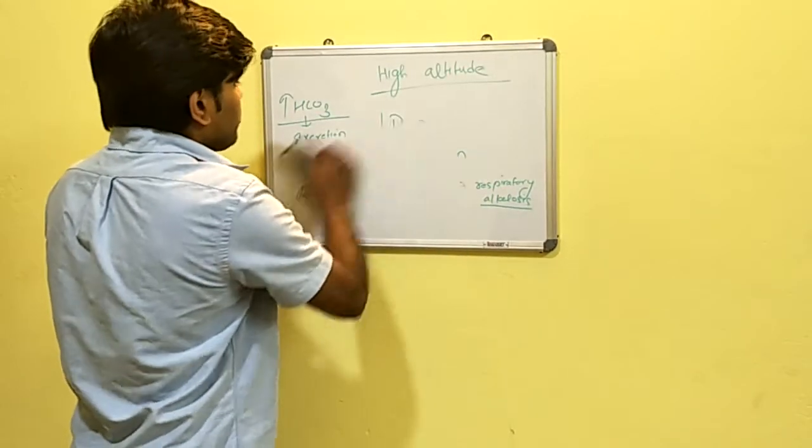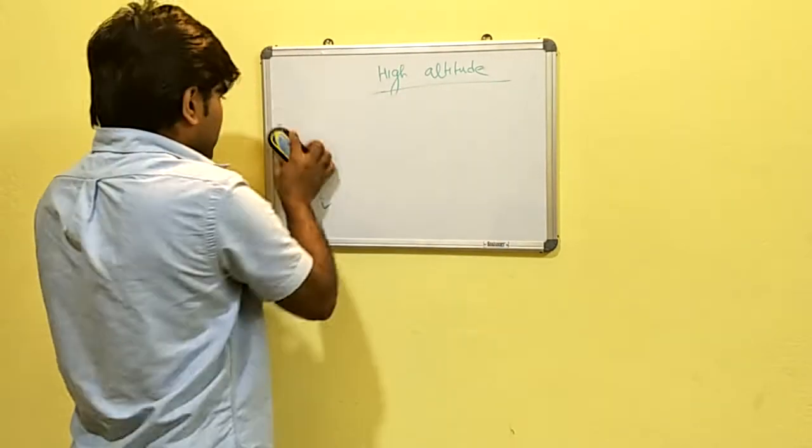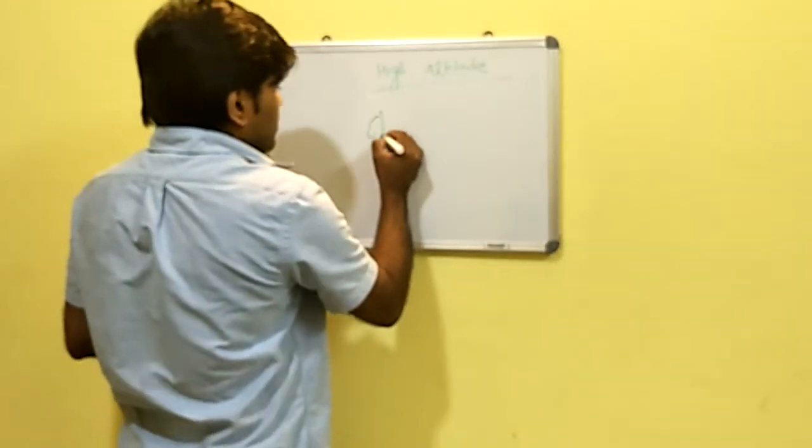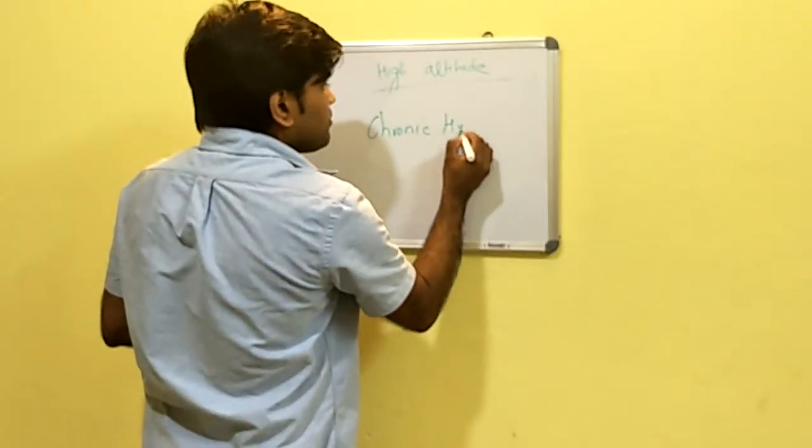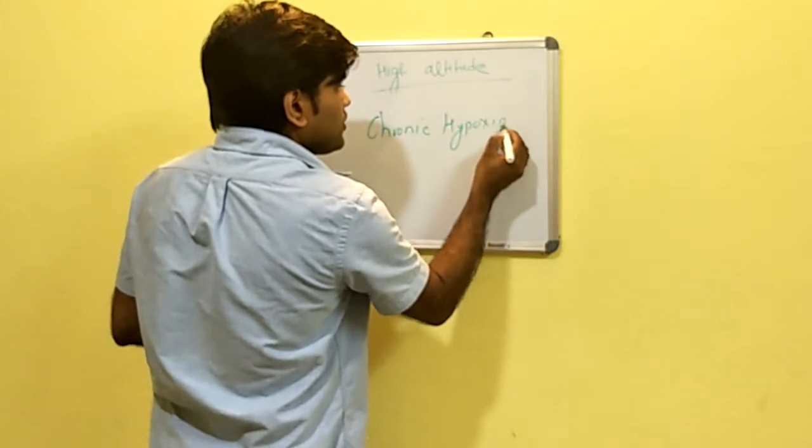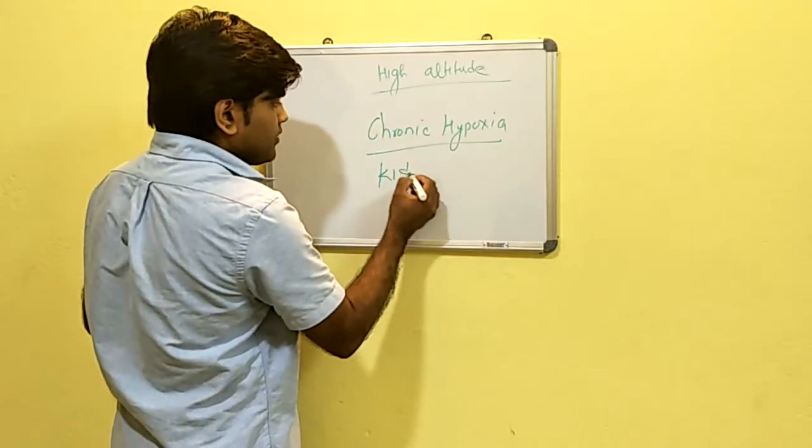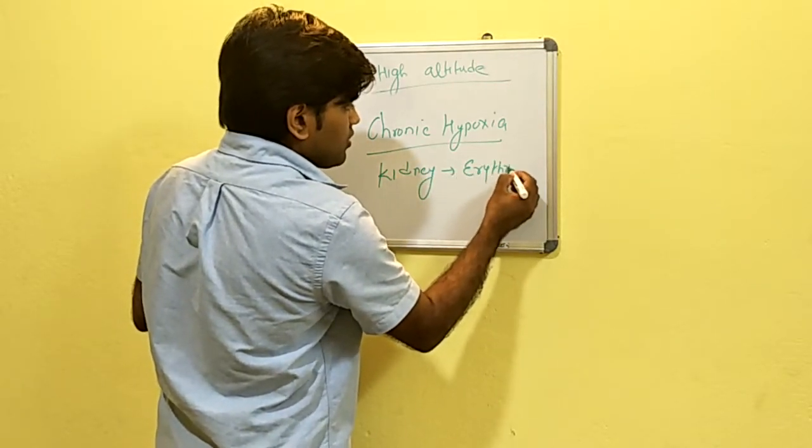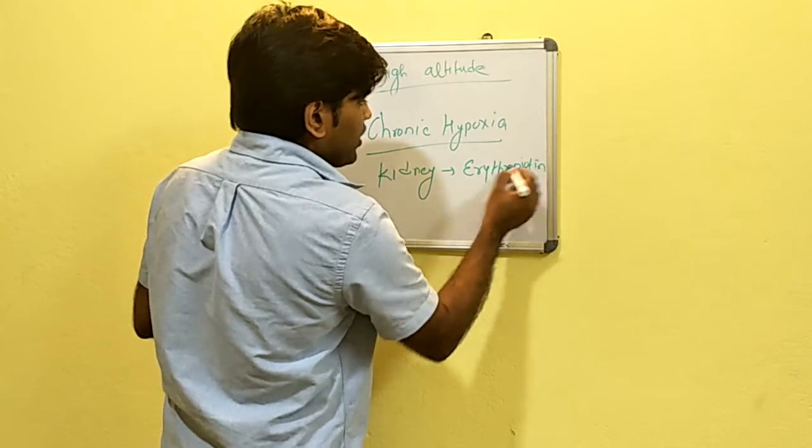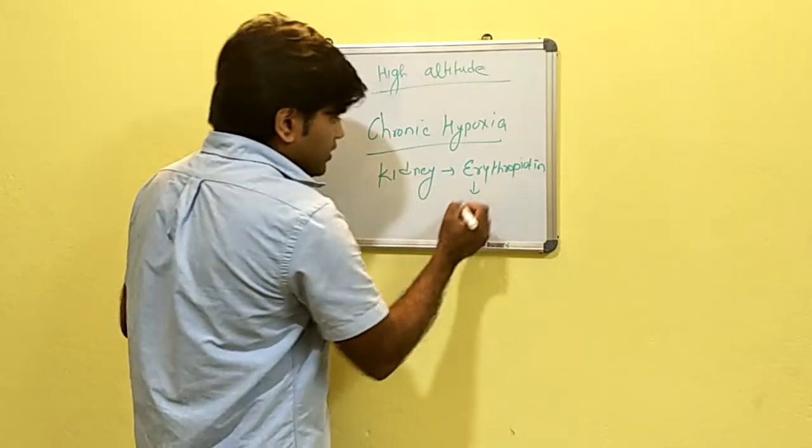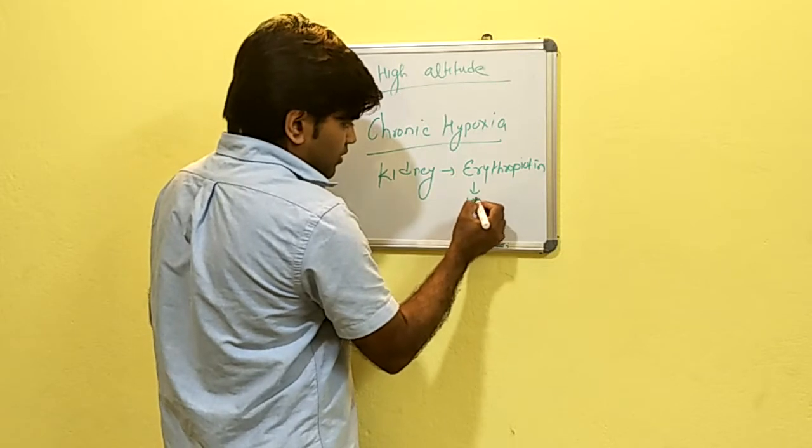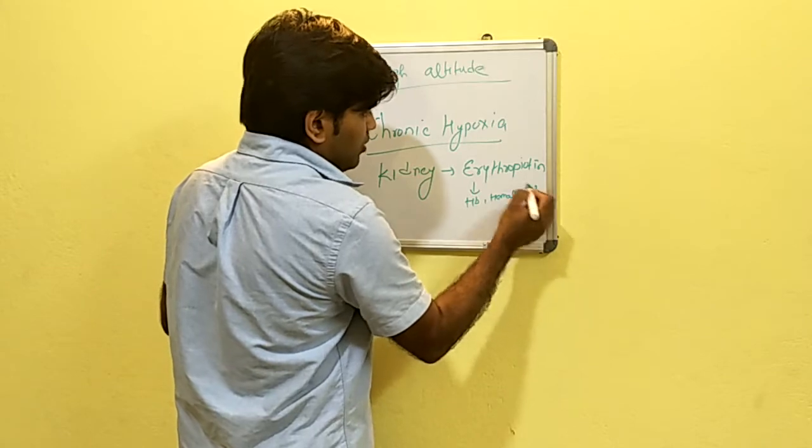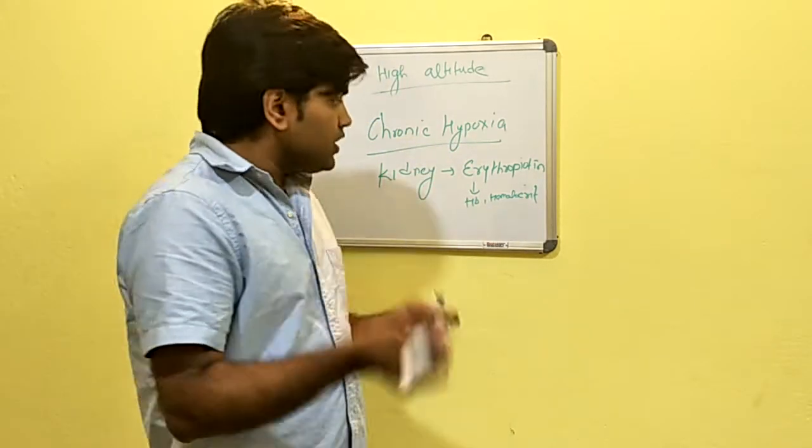Besides this, there are other changes that occur at high altitude and that are in chronic hypoxia. In chronic hypoxia, kidney will secrete erythropoietin. This erythropoietin helps to increase the hemoglobin and hematocrit in the body.